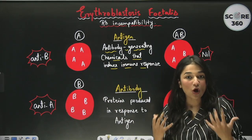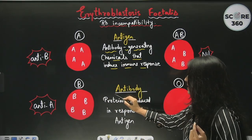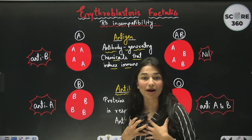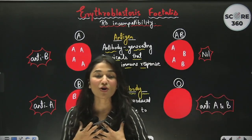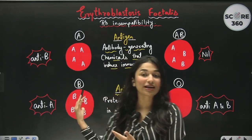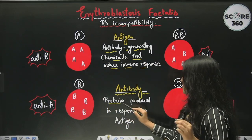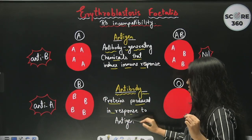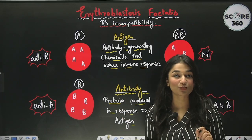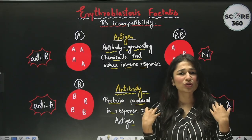Because of that immune response, our body produces antibodies. Antibodies are proteins produced in response to antigens. But only a foreign antigen entering the body will cause antibody production — the body will never produce antibodies against its own antigens.